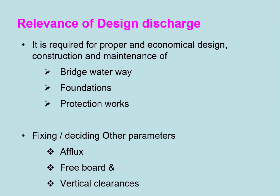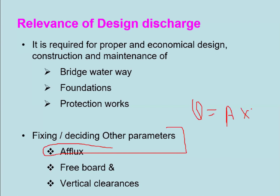Afflux is to be considered at the time of deciding the freeboard and clearance. How afflux is calculated depends on the velocity, and velocity is directly dependent on the opening of the span, since Q equals A into V (area of flow times velocity). Afflux is also indirectly governed by the design discharge. Freeboard depends on the size of the opening, the highest water level under the bridge, and the vertical clearance — all governed by the design discharge.